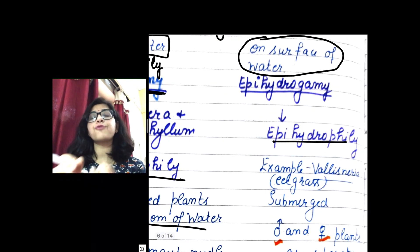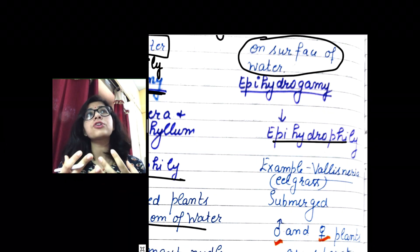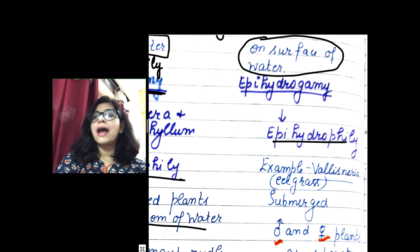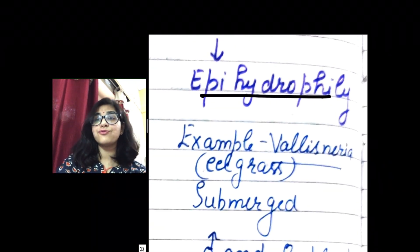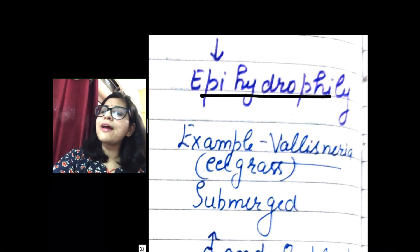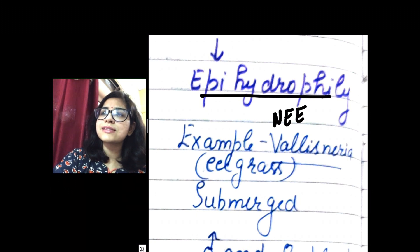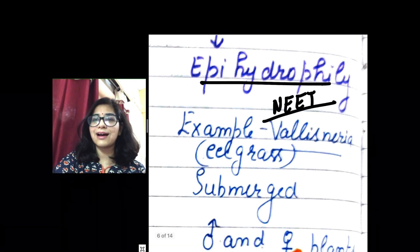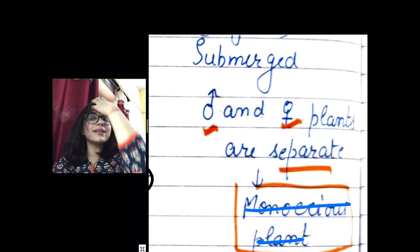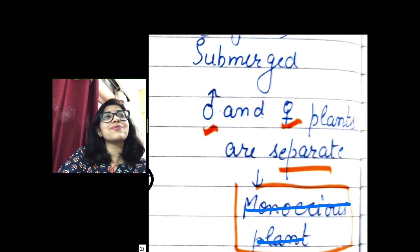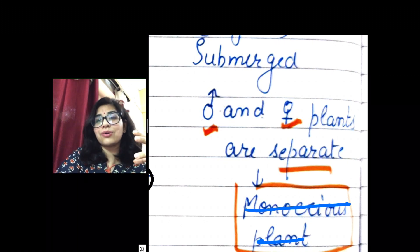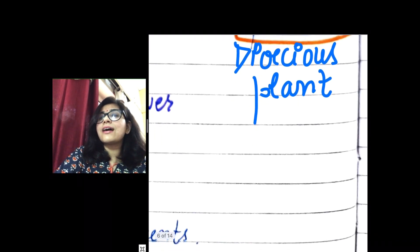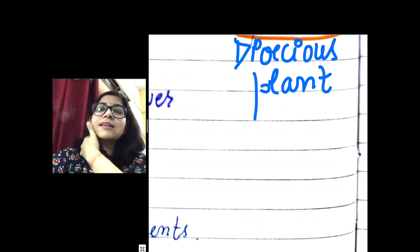The second category is for plants that prefer to pollinate on the surface of water. This type of hydrophily is known as epi hydrophily. The important example is Vallisneria, commonly known as eel grass. This is also a submerged plant, and this topic is important for every type of MCQ, including NEET.